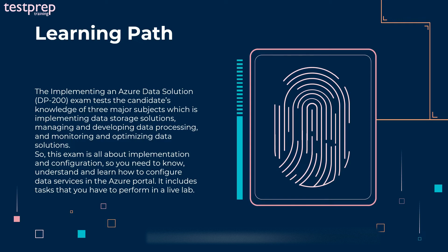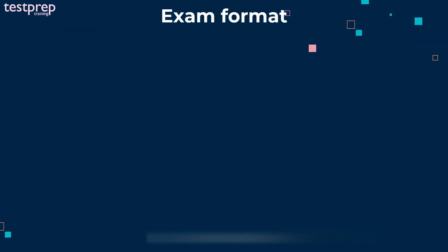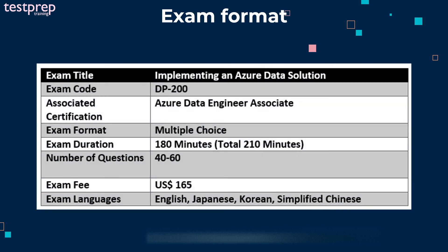It includes tasks that you have to perform in a live lab. Exam format: The exam includes 40 to 60 questions. The questions will appear in the form of multiple choice. The candidate will get 180 minutes to complete the exam — 210 minutes in total. The exam is available in various languages such as English, Japanese, Chinese, and Korean. The candidate has to pay 165 US dollars as the examination fee.